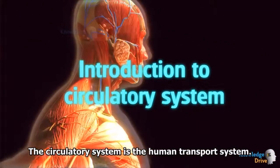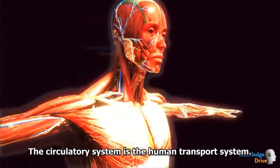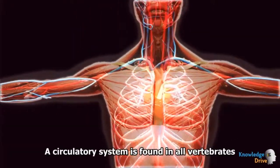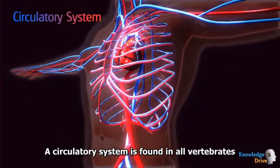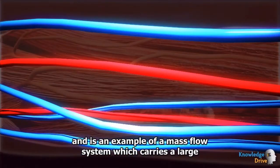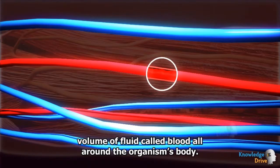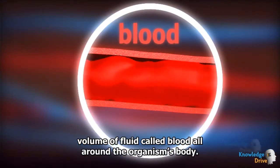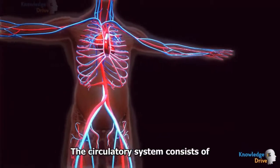The circulatory system is the human transport system. A circulatory system is found in all vertebrates and is an example of a mass flow system which carries a large volume of fluid called blood all around the organism's body.